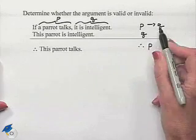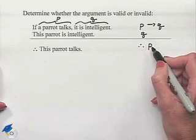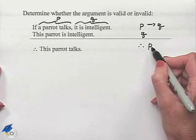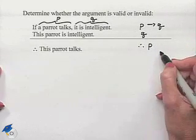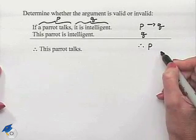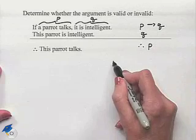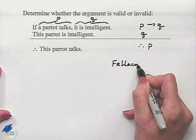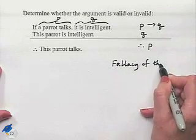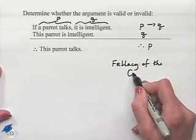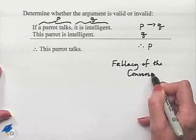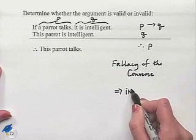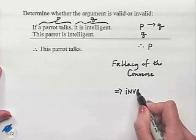Therefore, 'this parrot talks' would be statement P. When determining the validity of an argument, we should look for whether we can recognize the format. In fact, we should recognize this as the fallacy of the converse, and as such, this implies that the argument is invalid.